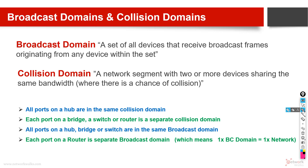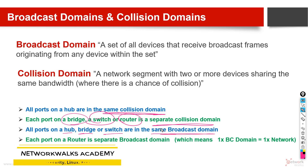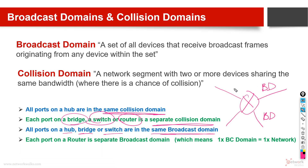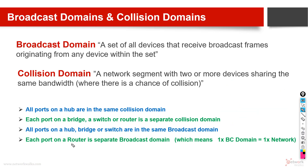Some important points about broadcast domains and collision domains: All ports on a hub are always in the same collision domain. Each port on a bridge, switch, or router always has a separate collision domain. All ports on a hub, bridge, or switch are always in the same broadcast domain, which means each router port has a separate broadcast domain. Each port on a router is a separate broadcast domain, which means one broadcast domain is always equal to one network.